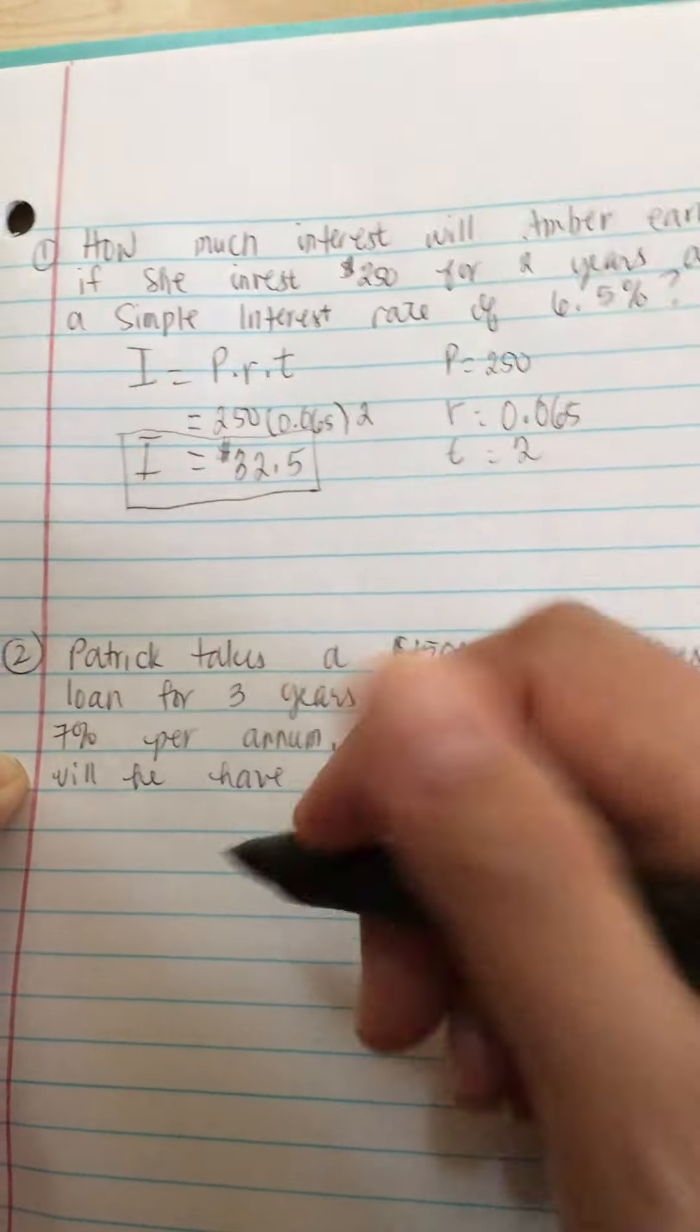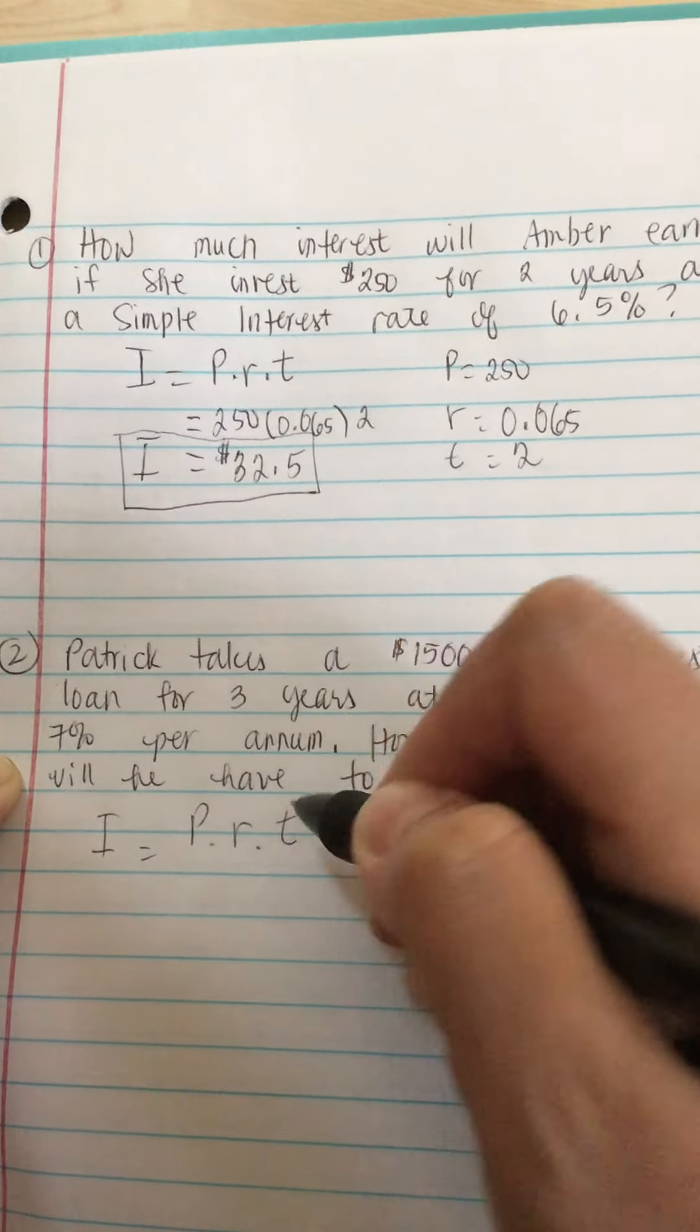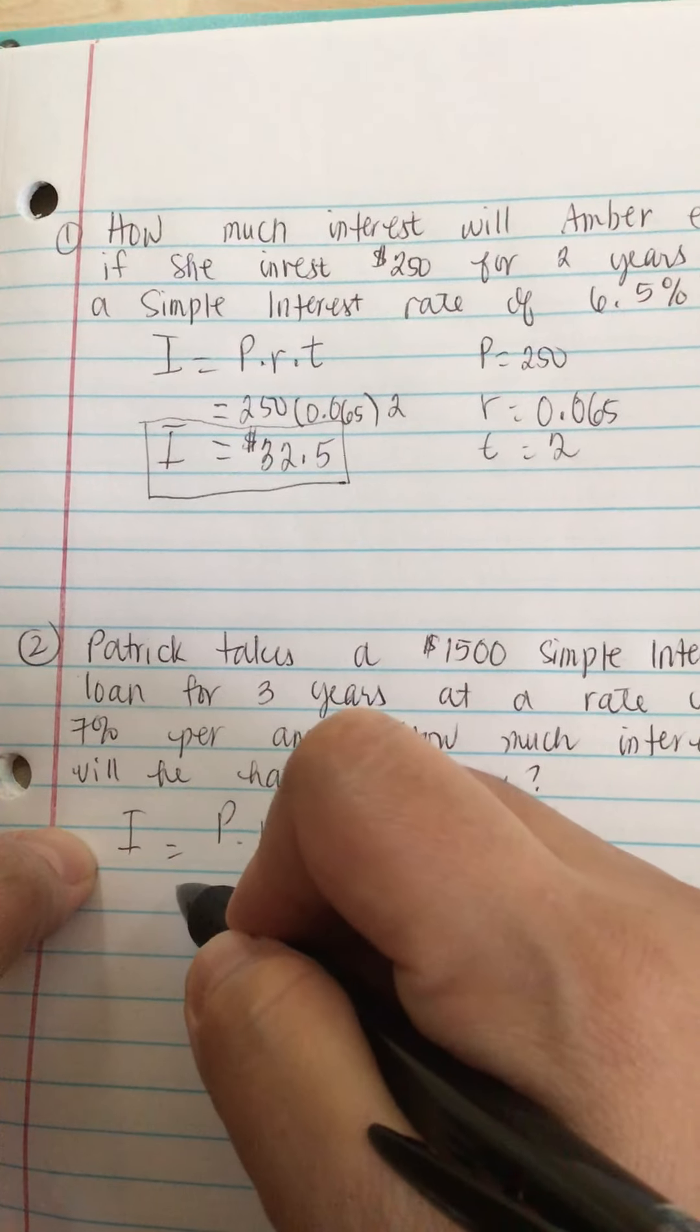You'll see this is the same formula. I is equal to P times R times T. And this will give us the interest.